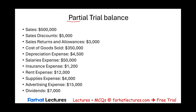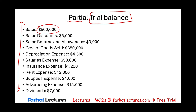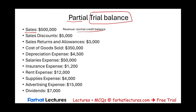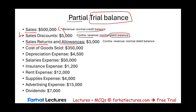We will start this session with a partial trial balance listing several accounts with dollar amounts, and we're going to go through a quick exercise to determine the normal balances for each account. Sales — that's revenue — it has a normal balance of a credit. Sales discount, a contra revenue, will have a normal balance of a debit; it reduces sales. Sales returns and allowances is also a contra revenue with a normal debit balance.